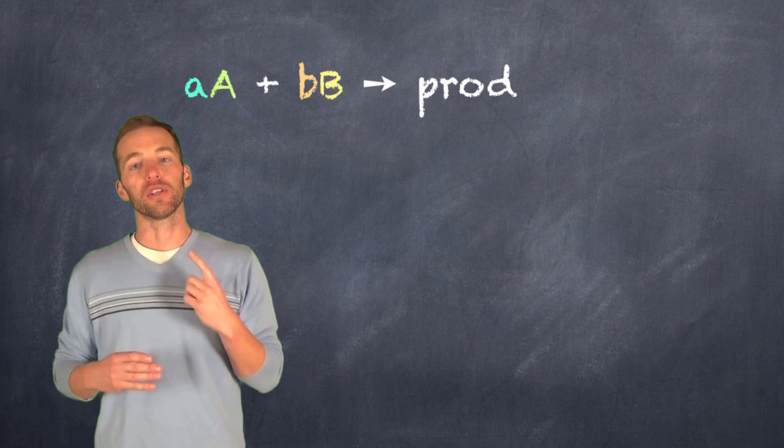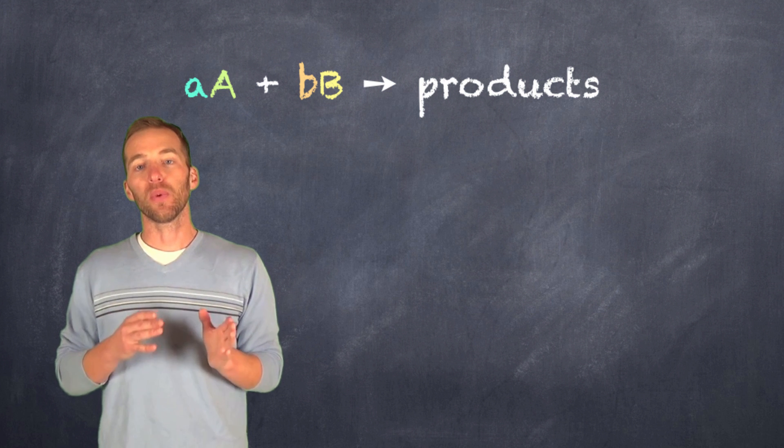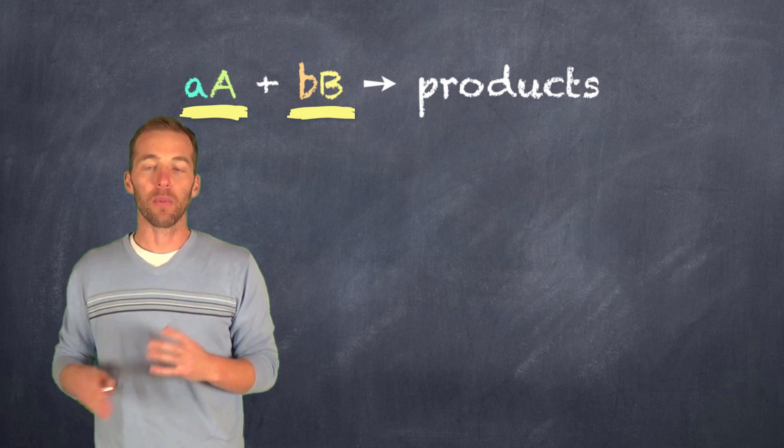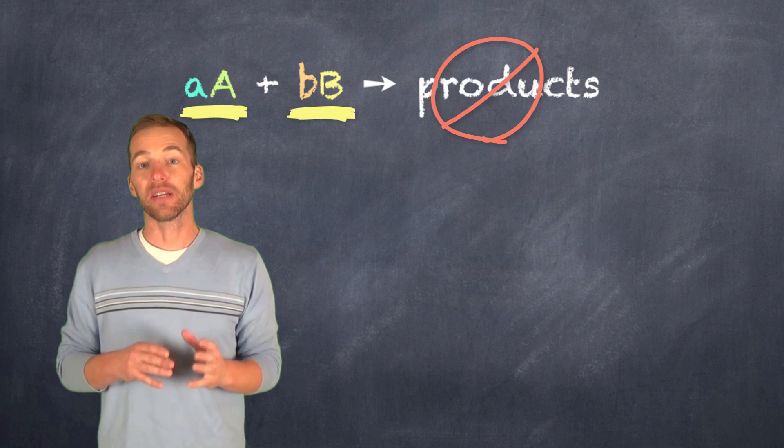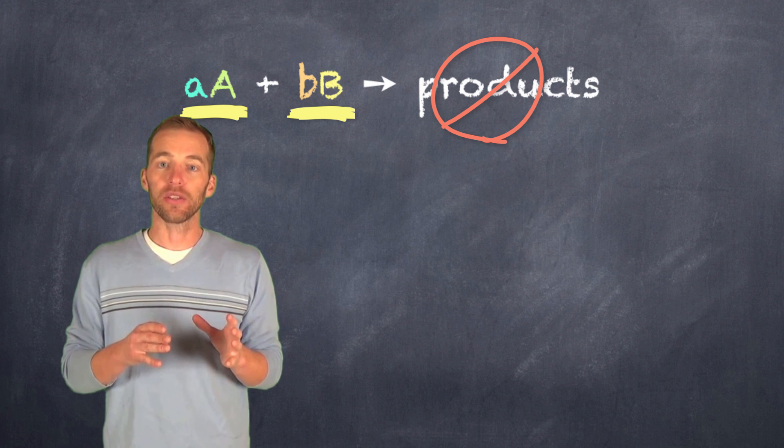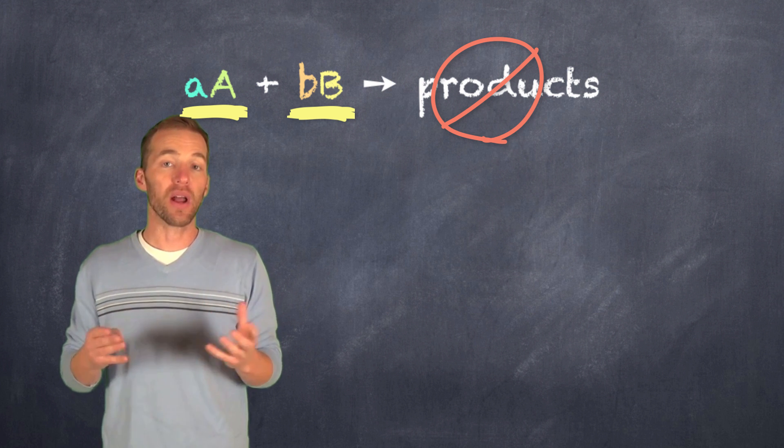If we use this as our general equation, we can see that we have two reactants forming products. Now we're not going to consider products here, because if we're looking at the initial concentrations of these reactants, the products haven't formed yet.